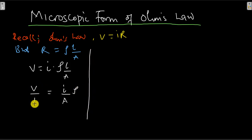But we know that V over L is actually the electric field intensity, the electric field strength, and I over A, the current divided by the cross-sectional area, is the current density.